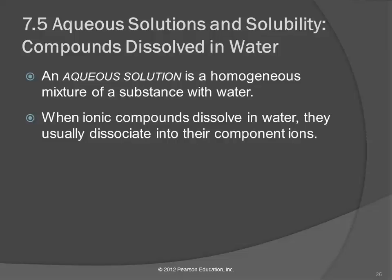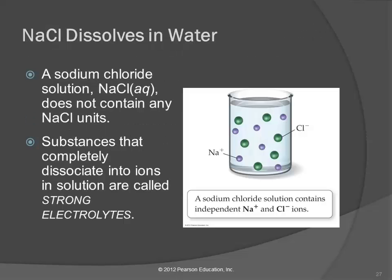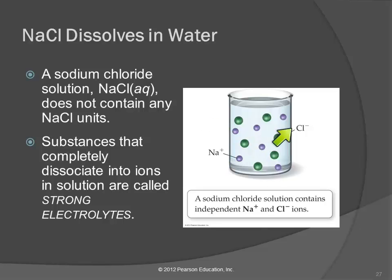Not all ionic compounds dissolve in water, but the ones that do usually dissociate into their component ions. Dissociate means they come apart. When you put sodium chloride into water, all the sodium and chloride ions dissociate — they come apart, move around, and distribute themselves evenly throughout the liquid water. There are no NaCl units present in the solution.